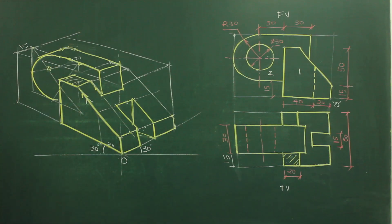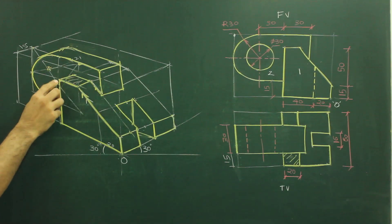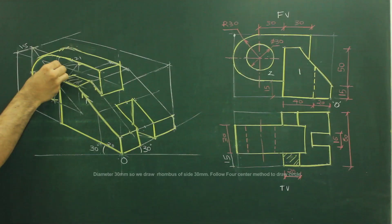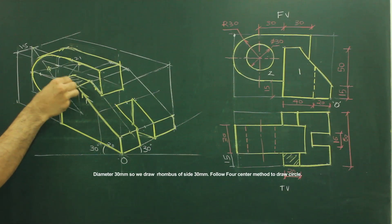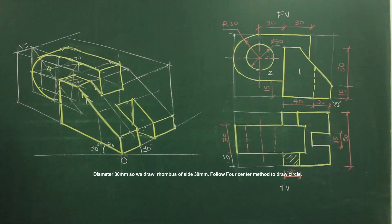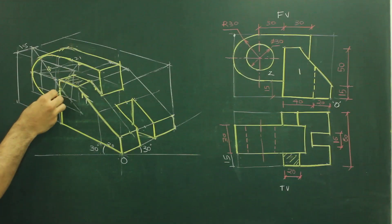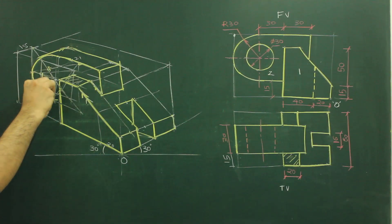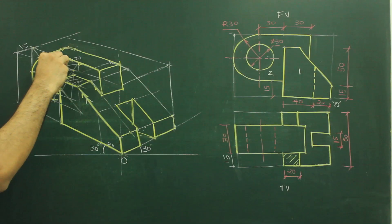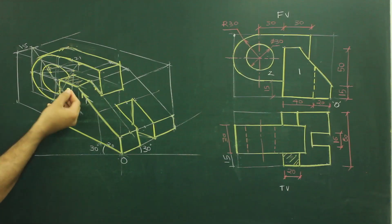Now we need to draw a circle here. We'll find the midpoint of this rhombus to get the center, then take 15 on all four sides and draw a rhombus of 30, because the diameter is 30. Again using the longest diagonal method: from this point draw this radius, from this point draw this radius, from this point draw this radius, and from the last point it will be behind so you won't be able to see it.